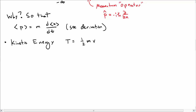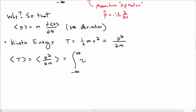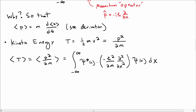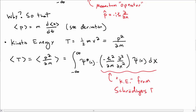We can also talk about kinetic energy. Recall kinetic energy is usually one-half mv squared, but it's more traditional to write it as p squared over 2m. So the expectation value of kinetic energy is the integral of psi-star times minus h-bar squared over 2m times the second derivative with respect to x, acting on psi, dx. Notice this quantity is exactly what appears as the kinetic energy term in the Schrödinger equation above.